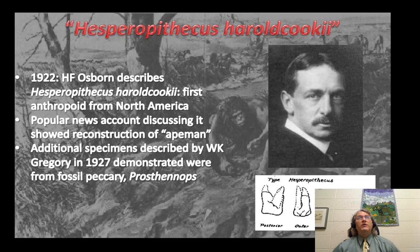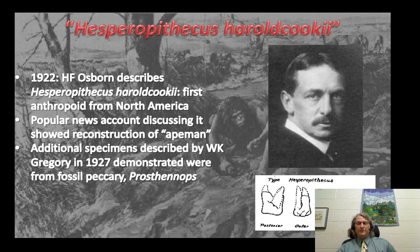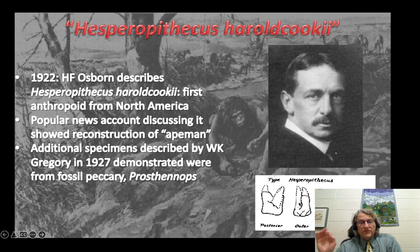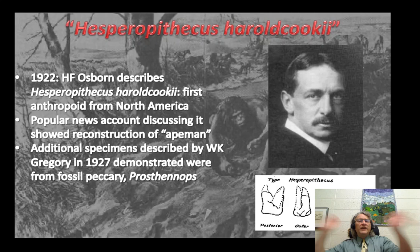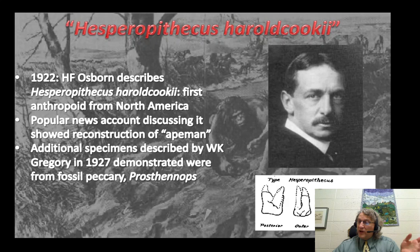And to give an example of this reciprocal illumination: scientists get stuff wrong, but the only way you find out that they get something wrong is because people do more science. So back in 1922, this dude, Henry Fairfield Osborne — we'll re-encounter him again. He's a very important figure in vertebrate paleontology in the first part of the 20th century; among other things, he's the guy who named Tyrannosaurus Rex. He described, based on a weathered tooth, what he interpreted as the first anthropoid from North America. Anthropoids are the group that includes humans, great apes, lesser apes such as gibbons, and monkeys.